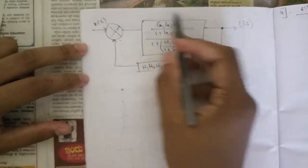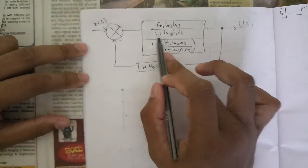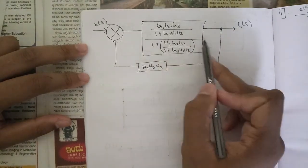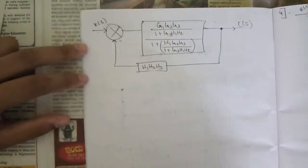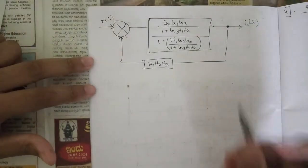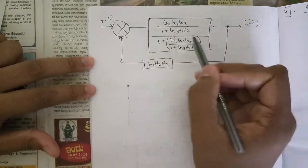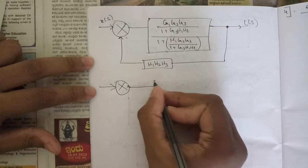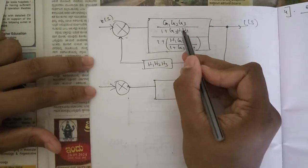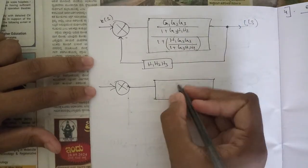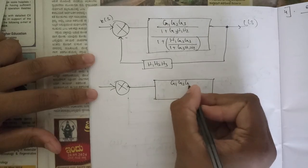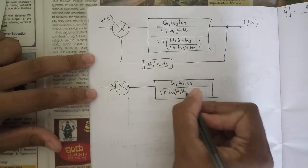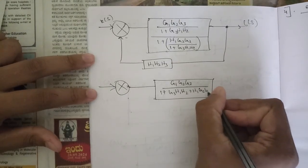After multiplying those two and writing in a single block, we get G1·G2·G3 divided by (1 + G3·h1·h2), whole divided by 1 plus G(s)·H(s), where H(s) is h1. We have a final minor loop here. Before solving that minor loop, we can cancel the denominator terms by taking the LCM to make our problem simpler. After cancellation of (1 + G3·h1·h2) in both numerator and denominator, we get G1·G2·G3 divided by (1 + G3·h1·h2 + h1·G2·G3).